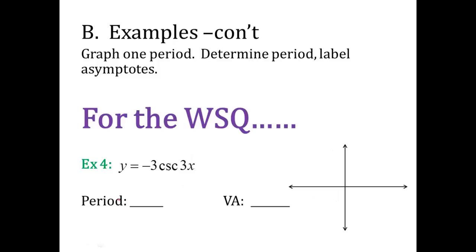Try this one on your own for the quiz. Find the period, find the vertical asymptotes, sketch it out, and we'll talk about it in class to see if you got it right.